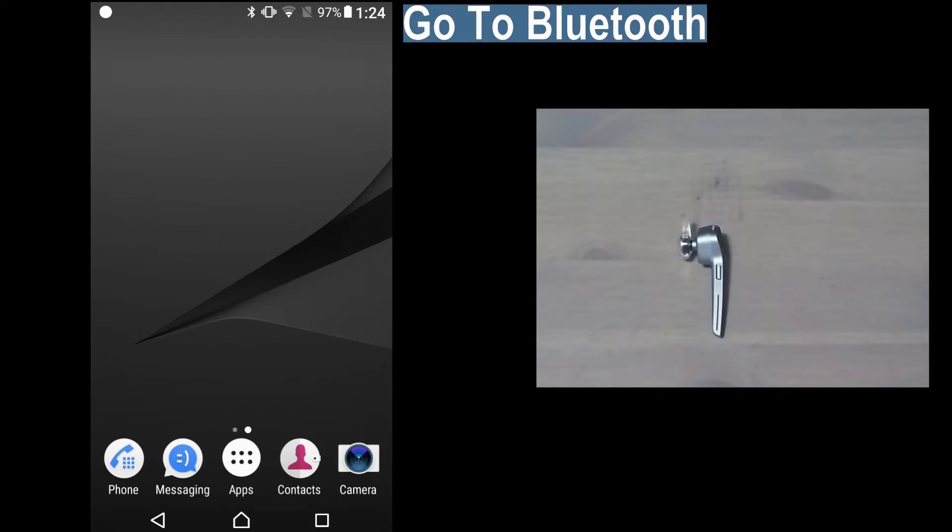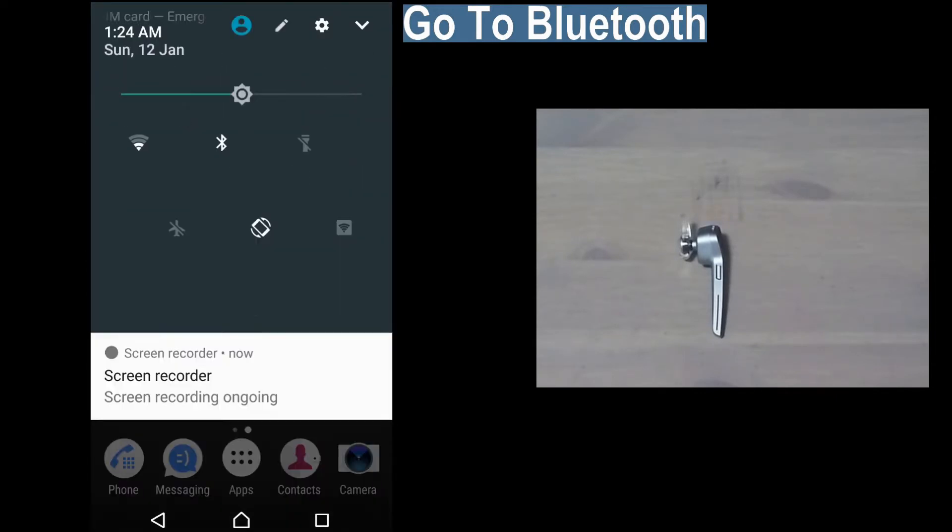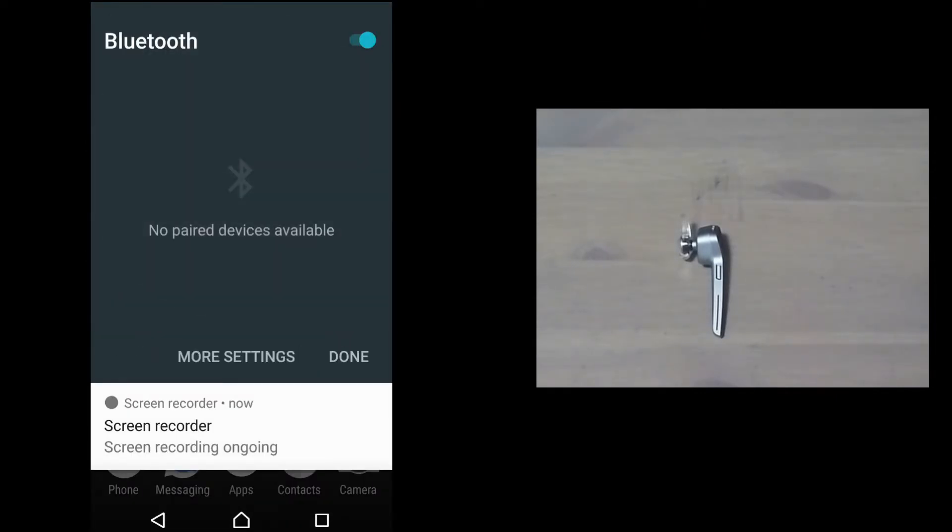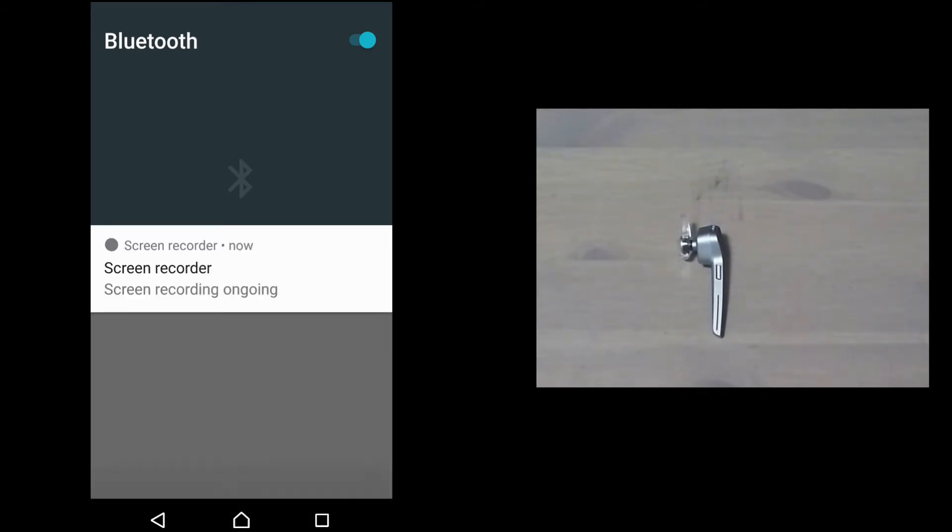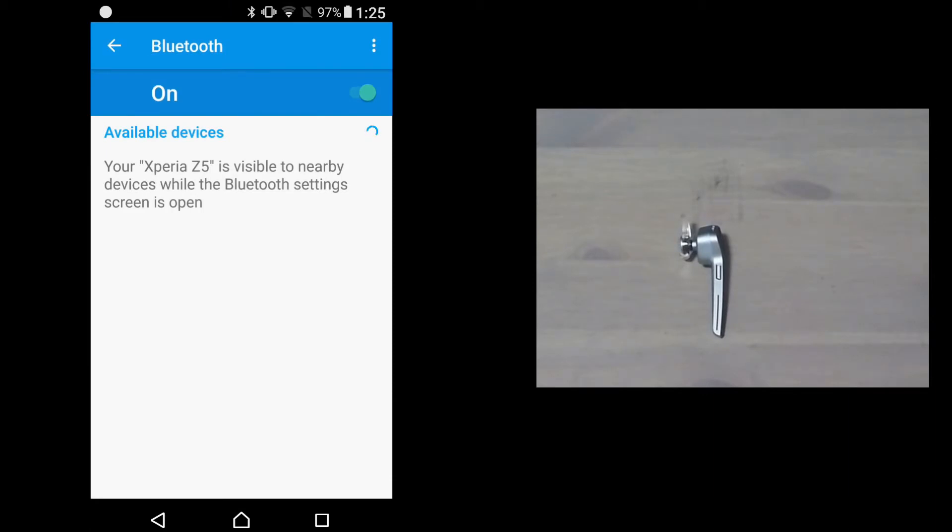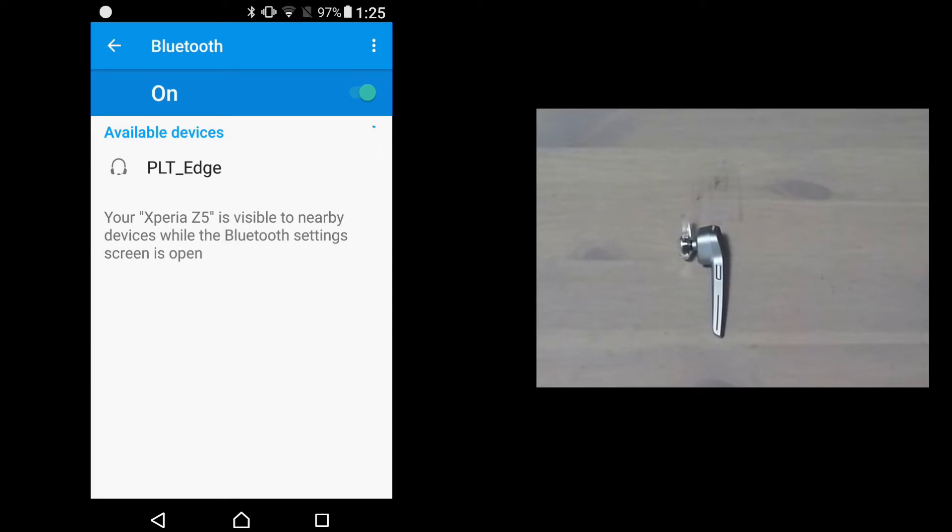From the mobile phone, let's go to the Bluetooth and let's select more settings. As you can see, it has found our Voyager Edge. So let's select that.